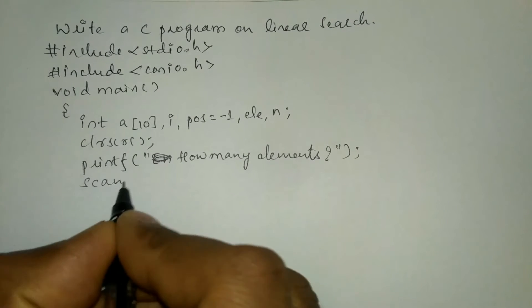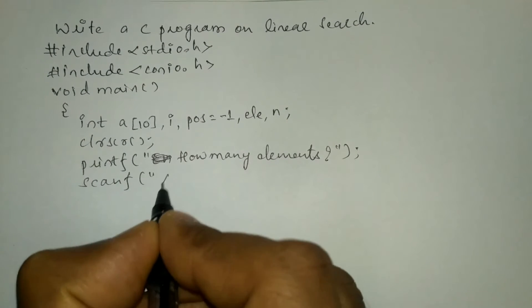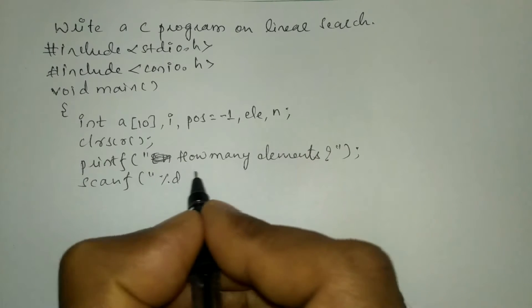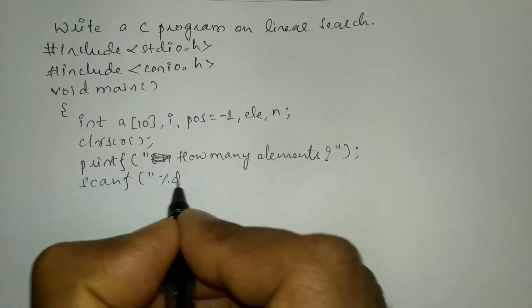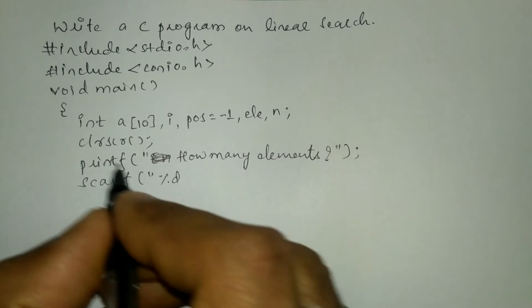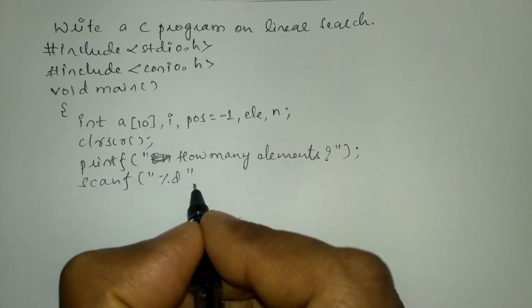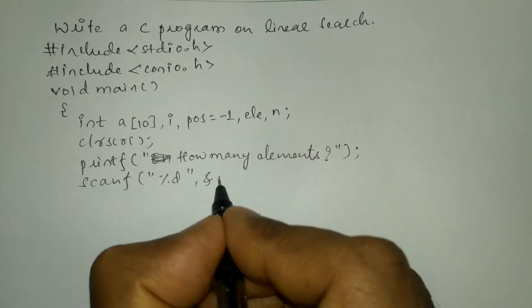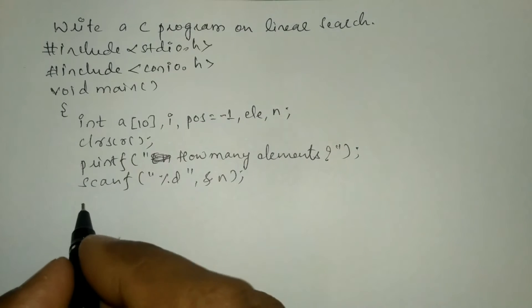Using the scanf statement we are going to receive the response from the user through the keyboard. In double quotation marks we will write the %d format specifier which represents integer type data. We end the double quotation mark, put a comma, and use the variable ampersand of n.